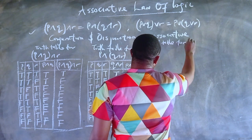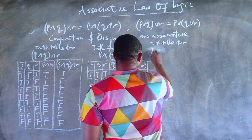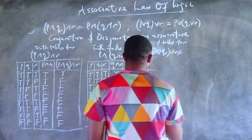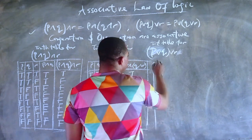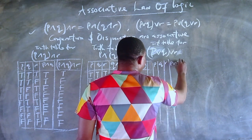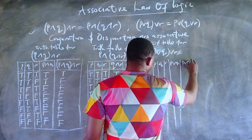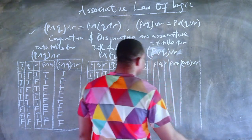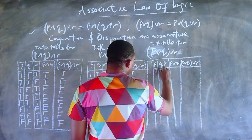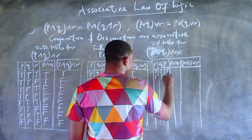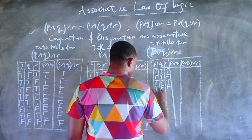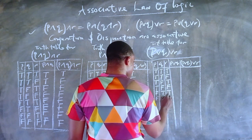Now let's go on and prove the next part of this law. We need the truth table for (P or Q) or R, and then a truth table for P or (Q or R). For the first, we need P, Q, R, P or Q, and the compound statement (P or Q) or R.